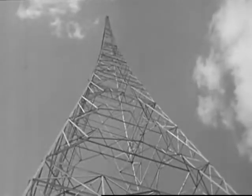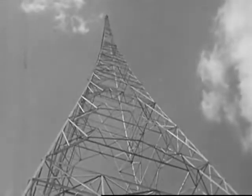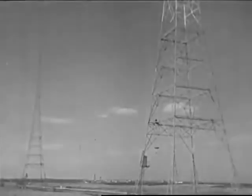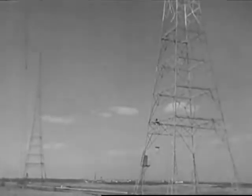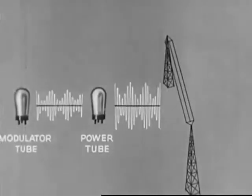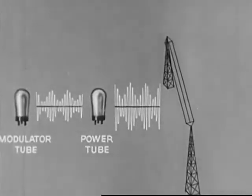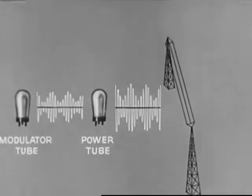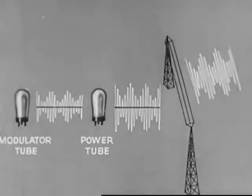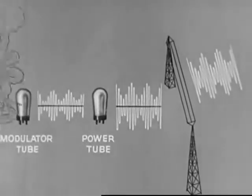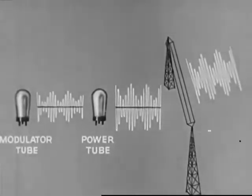This antenna consists of two steel towers and a central wire supported by a cross cable between them. Radio waves are sent out in all directions. Thus, from the power tube, the modulated radio waves go to the antenna. The radio messages leave the antenna as electromagnetic waves and travel out into space with the speed of light.